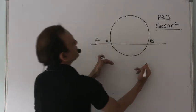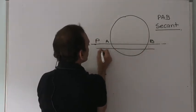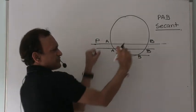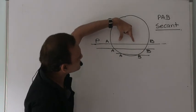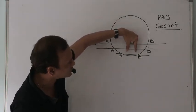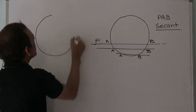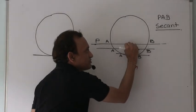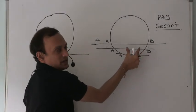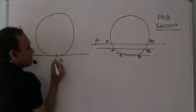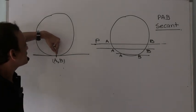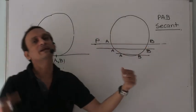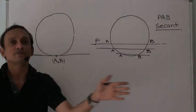Now let me start to pull PAB downwards. Then A comes here, B comes there; further down, A comes here, B comes here. If I keep pulling AB down, the two points A and B come closer and closer together. Eventually, in a limiting case, A and B converge — they sit at the same point. So all of these were secants, but this is a special secant where A and B degenerate into one single point.